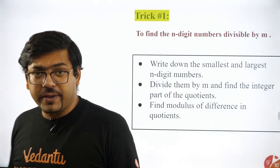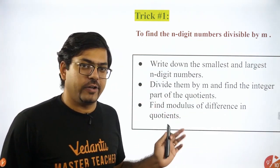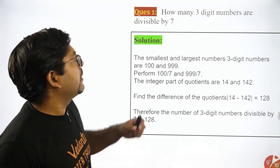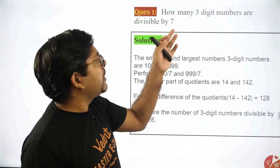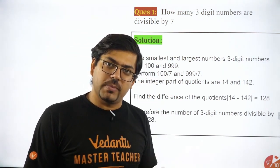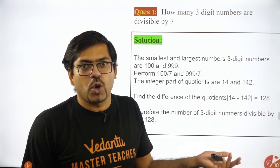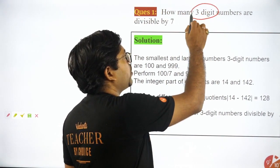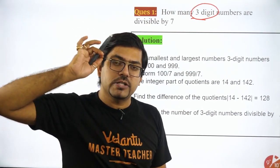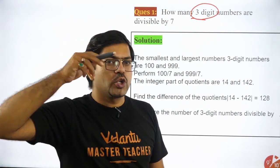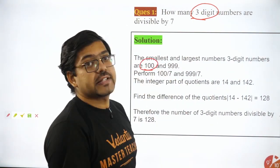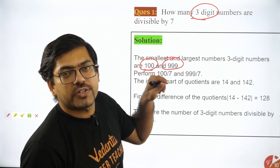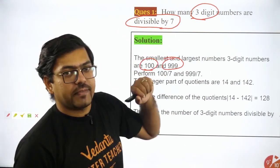So here we go. First thing — this is a theory, and I am sure you won't understand it, so let's not get into it. Let me directly jump to an example. So first example — you would have seen this question multiple times: how many three-digit numbers are divisible by seven? How many four-digit numbers are divisible by four? These type of questions are so common. Now whenever you get these type of questions, if there is a three-digit number being talked about, you have to just take the smallest and the largest three-digit number possible. The smallest three-digit number is 100 and the largest is 999. Then you have to divide these two numbers by seven.